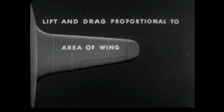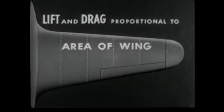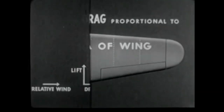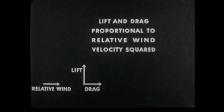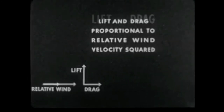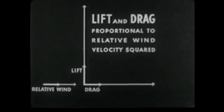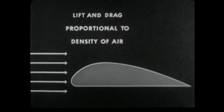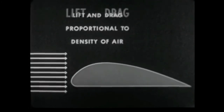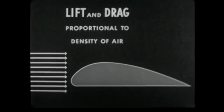Wind tunnel tests have also proven that for any given airfoil, lift and drag vary directly with the area of the wing — if the area is doubled, lift and drag are also doubled. Lift and drag vary directly as the square of the velocity of the relative wind — if wind velocity is doubled, lift and drag are multiplied by four. Lift and drag are directly proportional to the density of the air passing over the airfoil — if air density is doubled, lift and drag are also doubled in value.